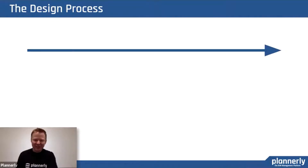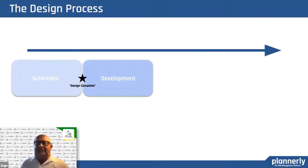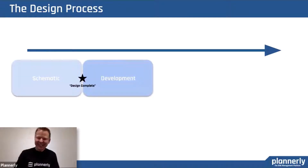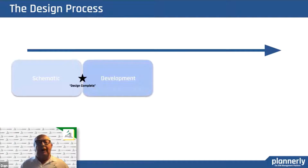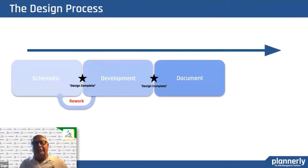The design process is a linear process — aspirationally. It's supposed to start with schematic design, then at some point that's complete and we launch into DD, and we're at 50% DD — the definition of which no one agrees on — and then 95% DD. But actually, are we? The problem is the owner changes his mind, and we're back into rework. So we're starting over, looping, with a deadline to meet.